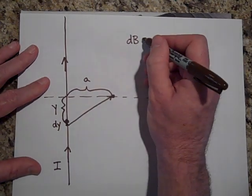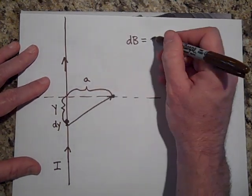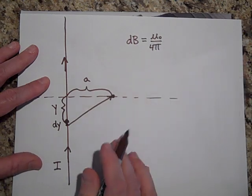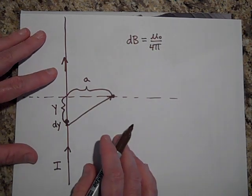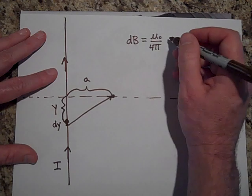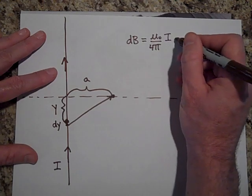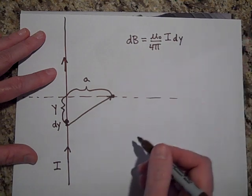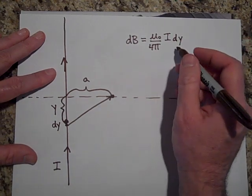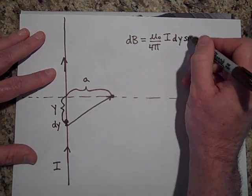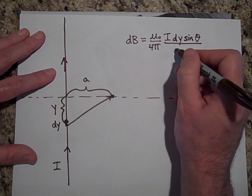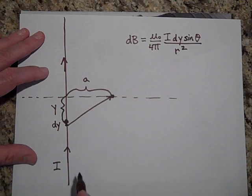the R is this vector. And so to get the field due to that, it's going to be mu naught over four pi, just constant. And now I'm going to do I times DL, but I changed the DL to DY since it's in the Y direction. I times DY times the sine of theta all over the R squared.